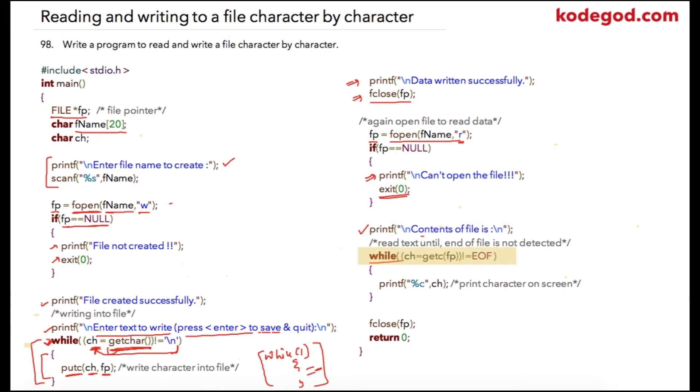So in the previous function we were using getchar to receive user's input from the keyboard and here we are reading character from the specified file. So fp is our file pointer so wherever the current cursor is present from that cursor location a character will be read and it will be stored into ch.